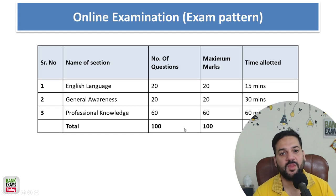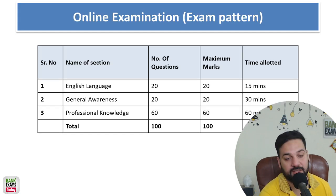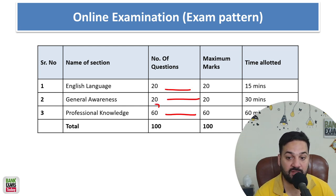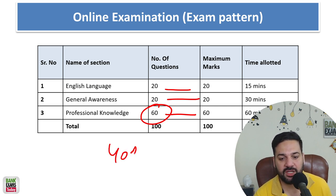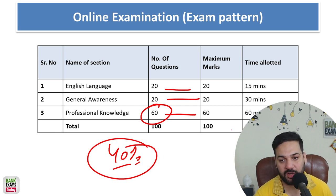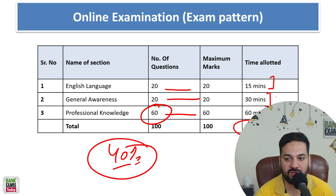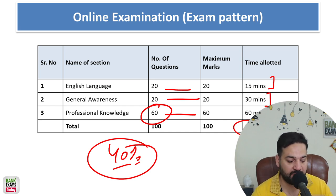This is the exam pattern. I hope you are already aware of it. There is English Language — 20 questions, 20 marks. General Awareness — 20 questions, 20 marks. And Professional Knowledge has the highest weightage and you need to score 40% marks in the exam. Time management won't be an issue. There are 15 minutes for English Language, 30 for General Awareness, 60 for Professional Knowledge — total 105 minutes.